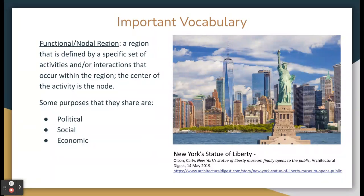An example of a functional region could be New York City. New York City would be the central business district where most of the political, social, and economic activities or interactions occur. The area around the city would also be a part of the functional region as they all apply to the specific node.